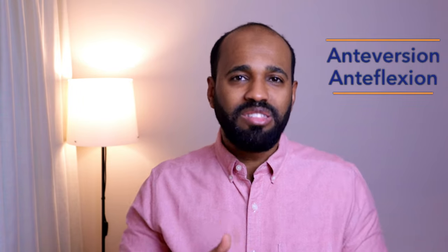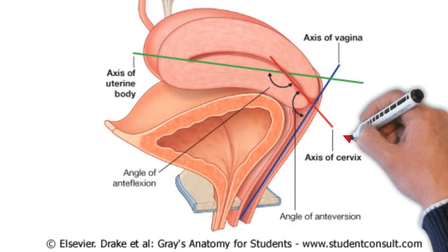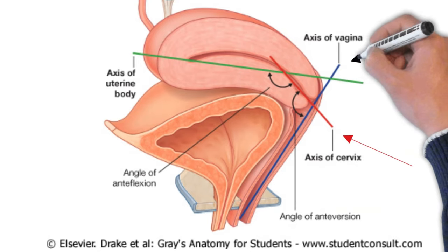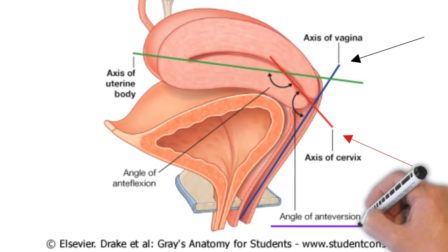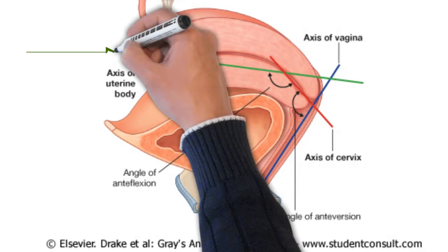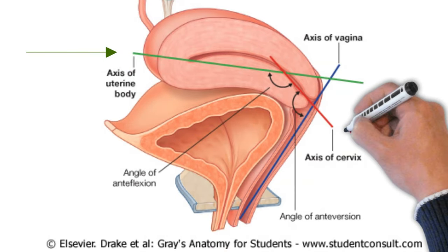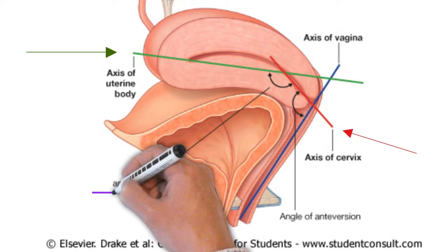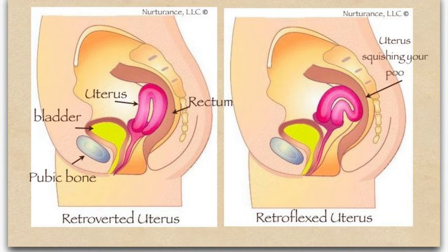Regarding the anatomical position of the uterus, among most women the position is referred to as anteversion and anteflexion. When the long axis of the uterus is bent forward on the long axis of the vagina, this is referred to as anteversion. When the long axis of the body of the uterus is bent forward at the level of the internal os with the long axis of the cervix, this is referred to as anteflexion. However, in 10–15% of women, the uterus is bent backward on the vagina and on the cervix, lying in the recto-uterine pouch — referred to as retroversion and retroflexion position.